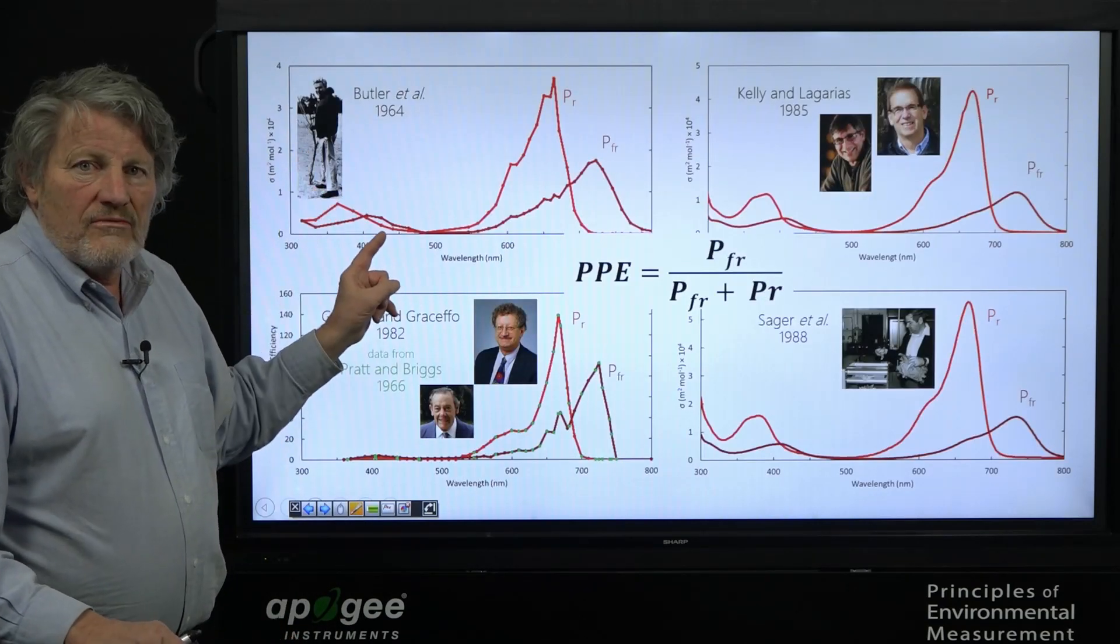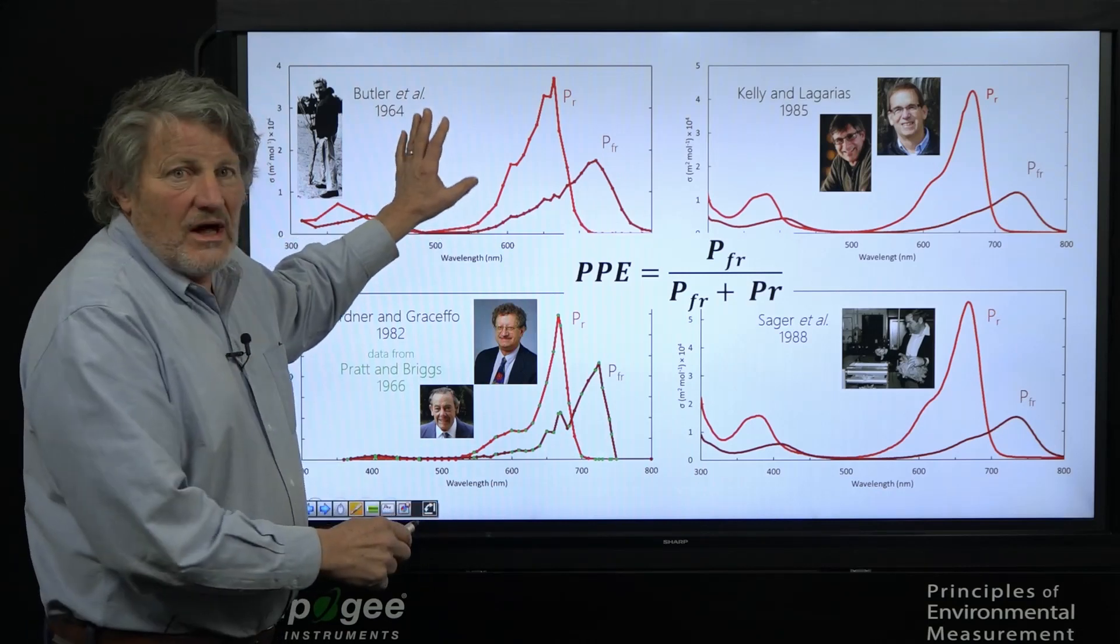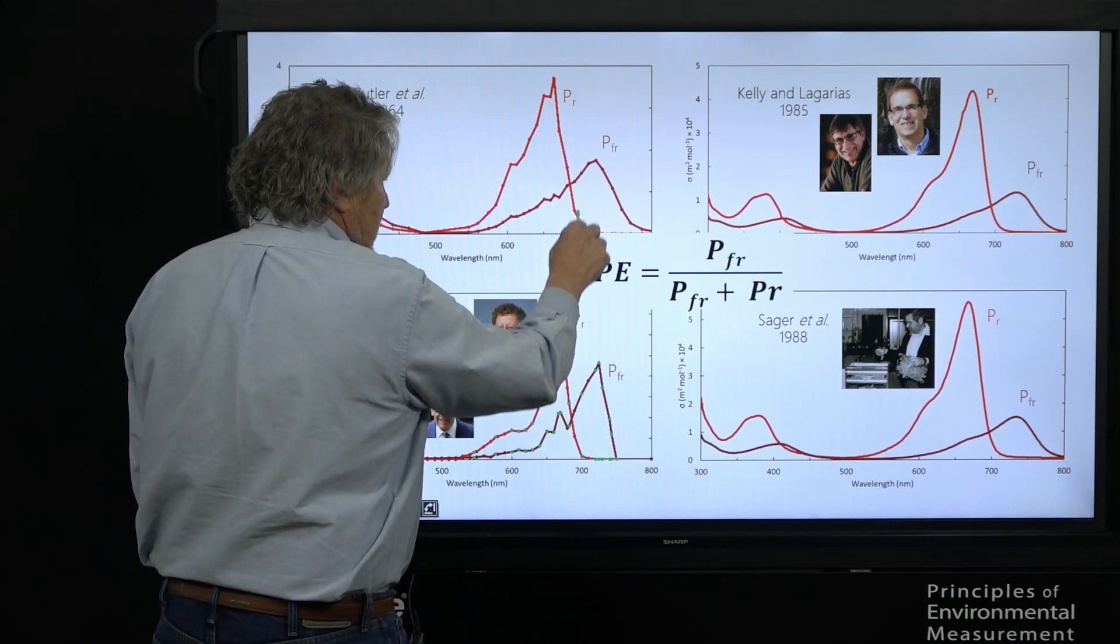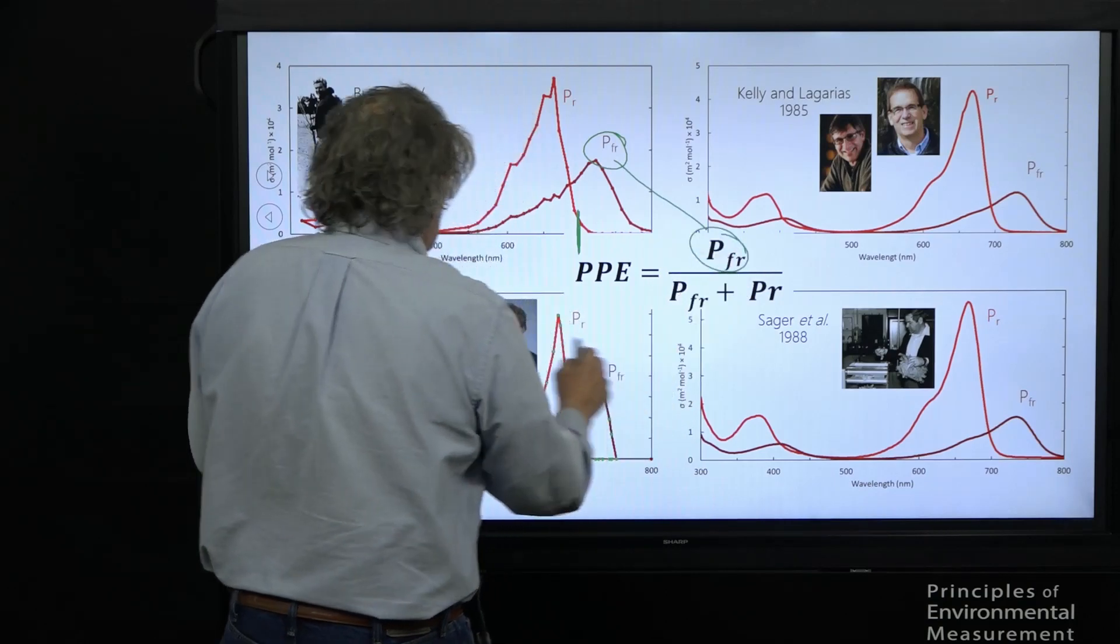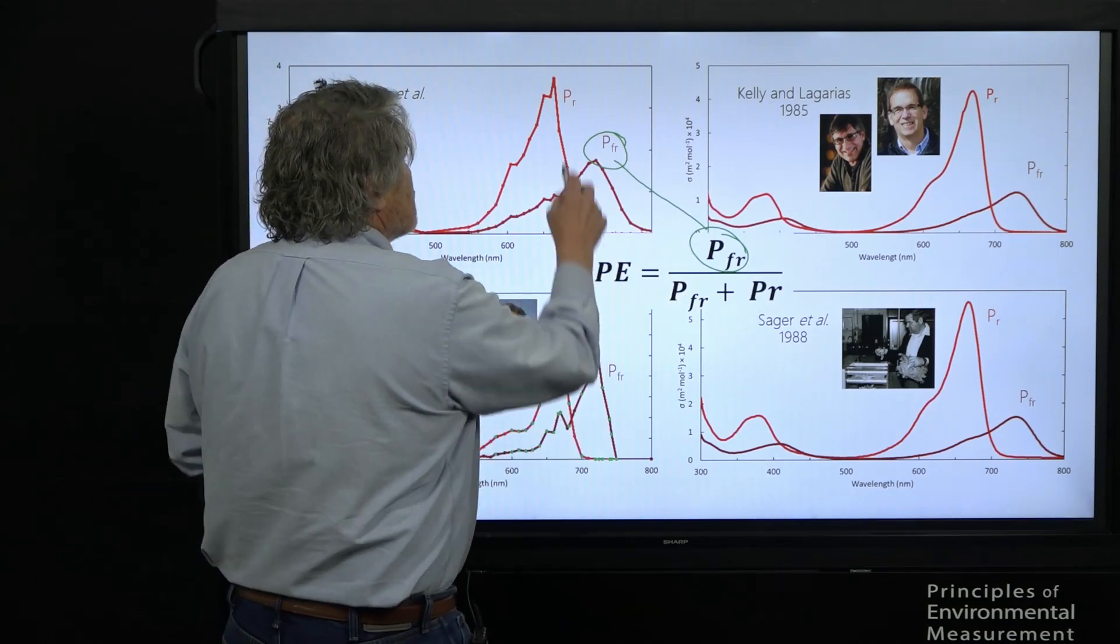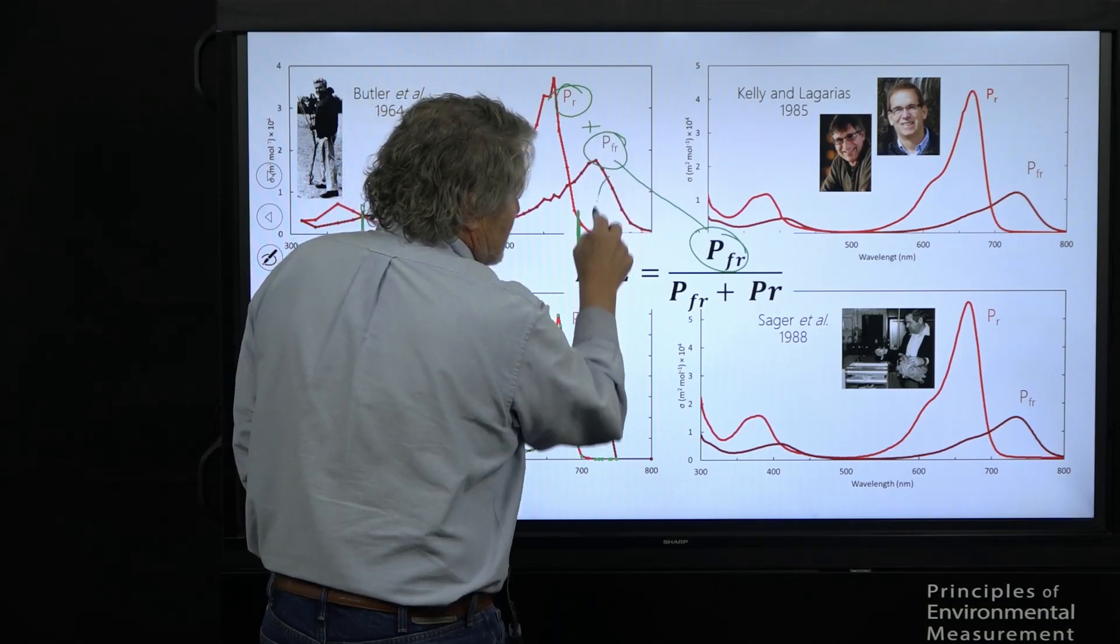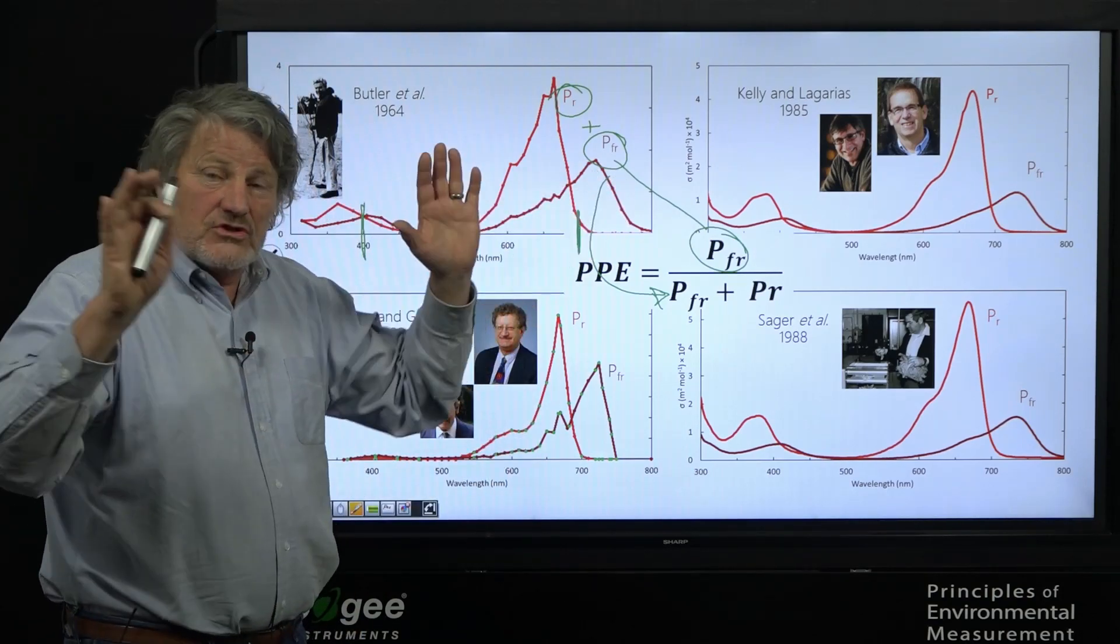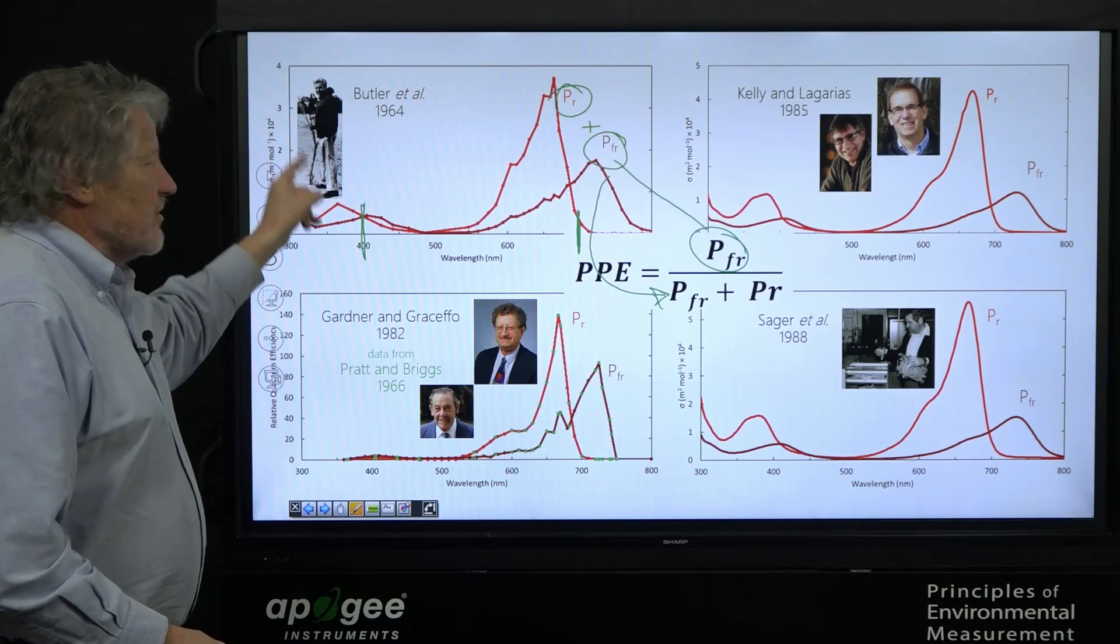Here is four people that have studied this ratio. Let's take Butler 1964. He was the first. These are weighting factors. Here's 400 nanometers. Here's 700 nanometers. And here's our ratio again, right here. Here's PFR, right there. So it sums up all these photons with a spectroradiometer and it puts it in the numerator. It also sums up phytochrome red and puts that, adds it together. And the sum of those two is the denominator. That's how this works. It sums all the wavelengths, which is terrific. But Butler was one of the first to do this.